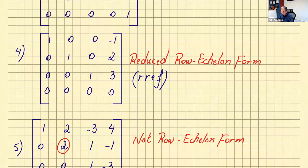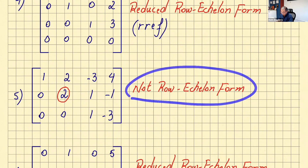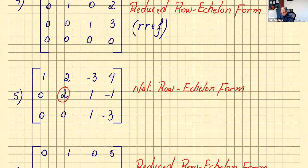Example five: no row entirely of zeros — that's fine. We have a leading one in the first row, but the next row starts with a two, not one. So you can stop right there: this is not in row echelon form.